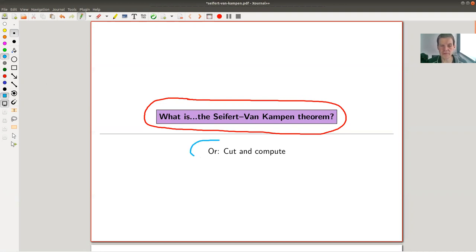The point will be this idea of cut and compute. The idea is that you want to compute the fundamental group, because we're doing algebraic topology. The fundamental group is fundamental to algebraic topology. The Seifert-van Kampen theorem is probably the most important theorem in algebraic topology to compute the fundamental group.